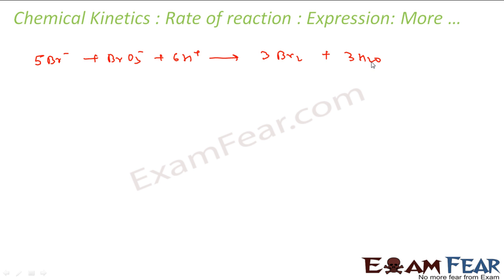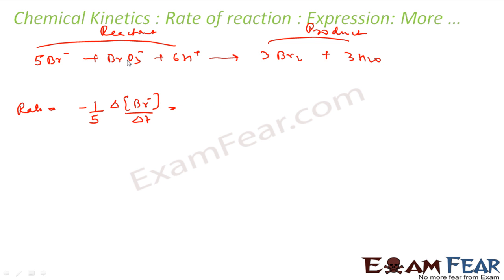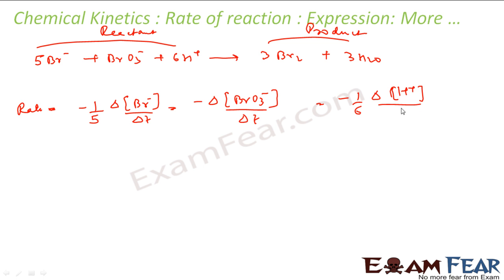Water is liquid. This is our reaction and we have to find the rate — let's do this for practice. These are all the reactants and this is the product. For the reactant side, it will be minus 1 by 5 times the rate of change of concentration of Br⁻ by ΔT, minus rate of change of BrO₃⁻ by ΔT, and minus 1 by 6 times the change of concentration of H⁺ by ΔT.